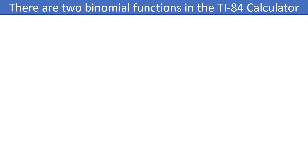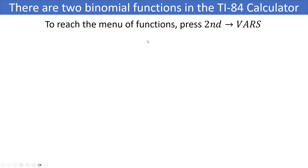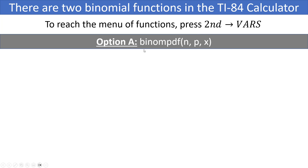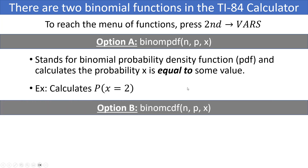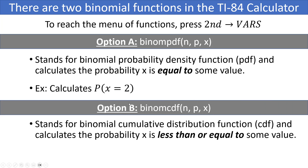To calculate probabilities on the binomial distribution, we'll use the TI-84 calculator. Press second, then VARS to reach the distribution menu. There are two options related to the binomial distribution. The first is binomial PDF, which calculates the probability that X equals some specific value — for example, P(X = 2). The second is binomial CDF, which calculates the probability that X is less than or equal to some value — for example, P(X ≤ 2).